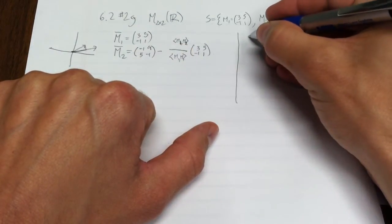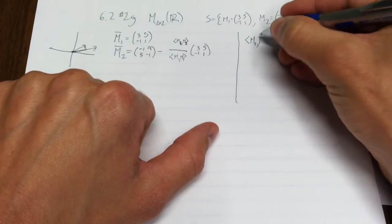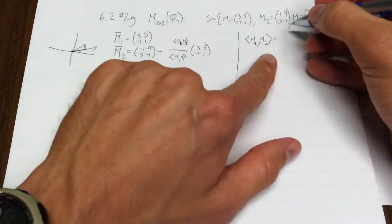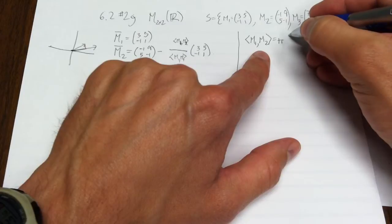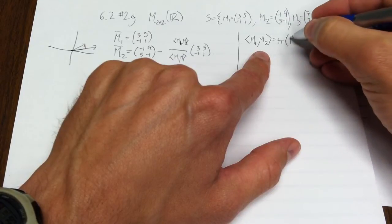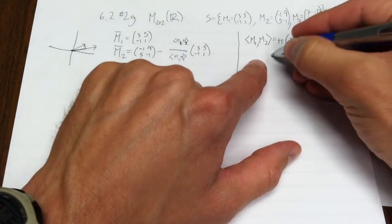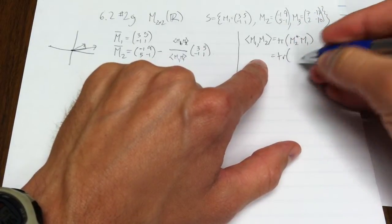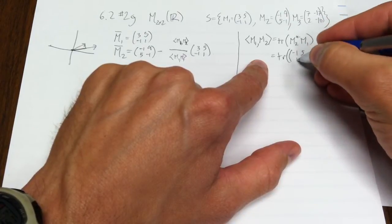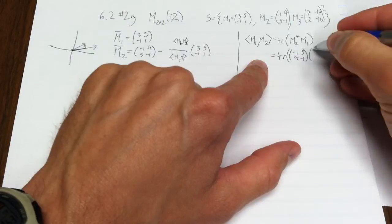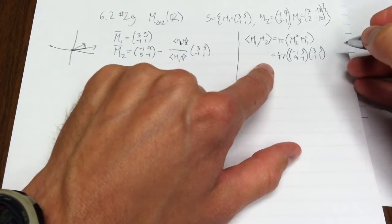So I have to figure out what those two numbers are. I'll do that sort of in my scratch work off to the side. So the inner product of m1 with m2, remember the inner product of matrices, if you go back a section, is the trace of the multiplication of the conjugate of the second times the first.